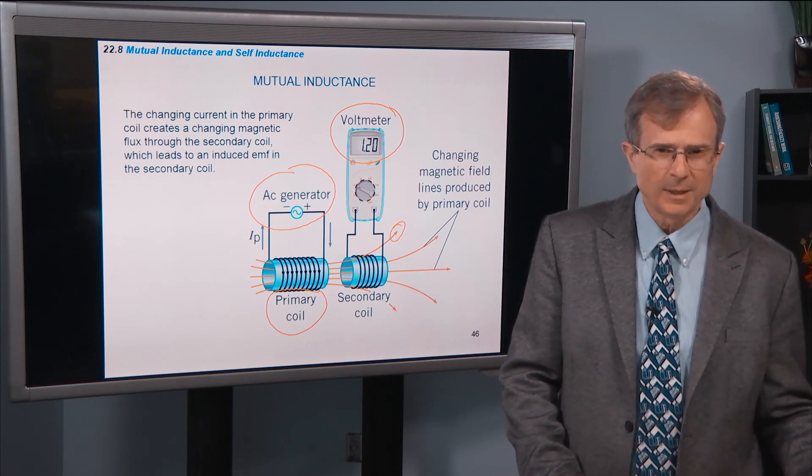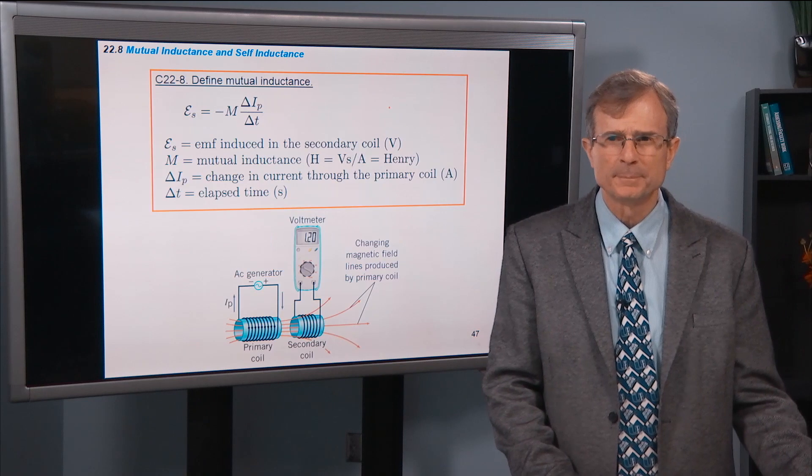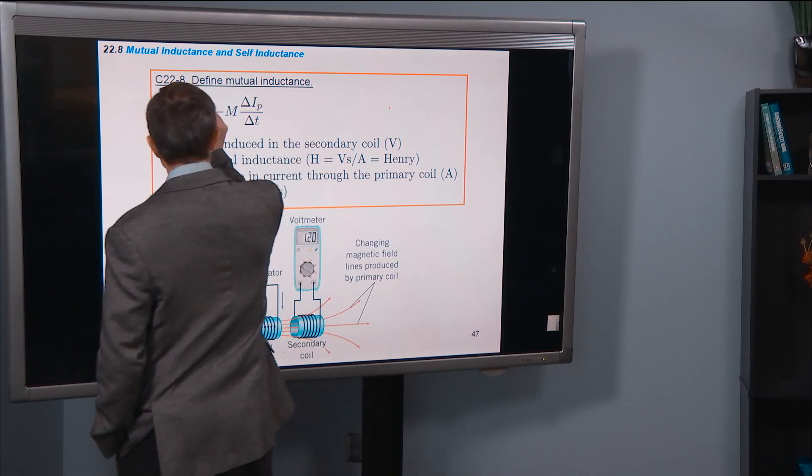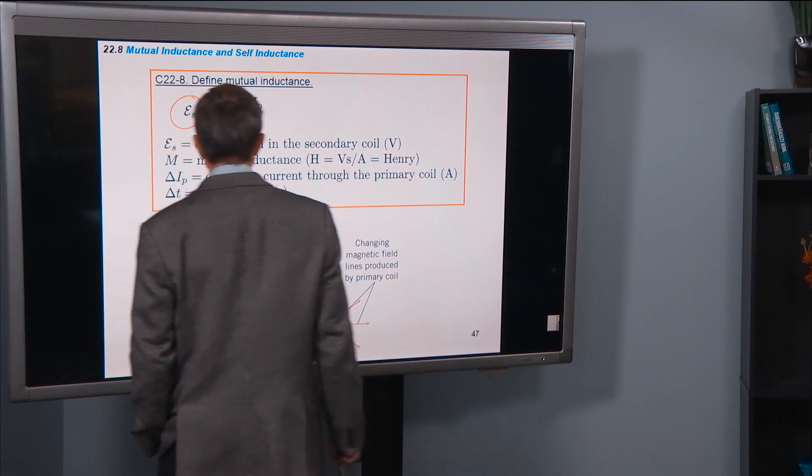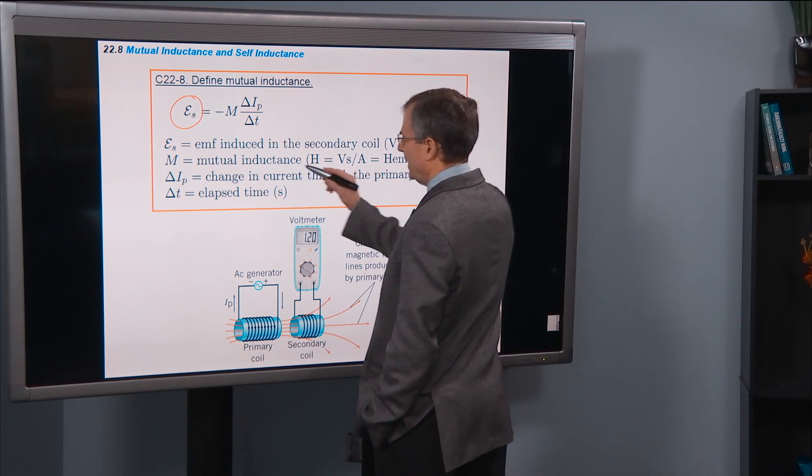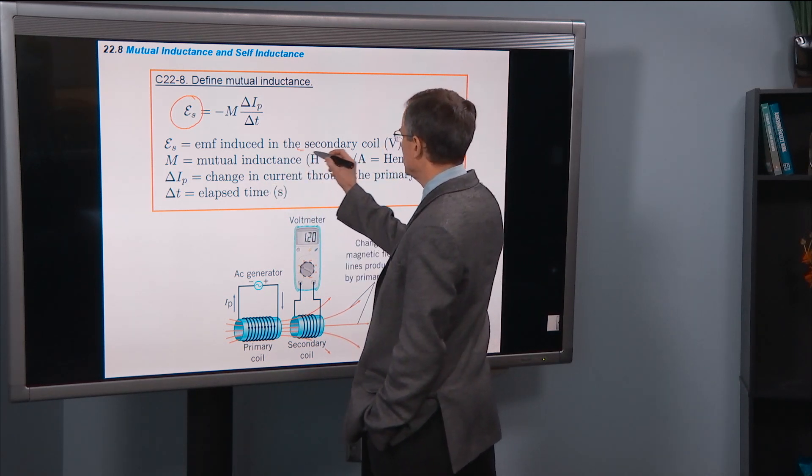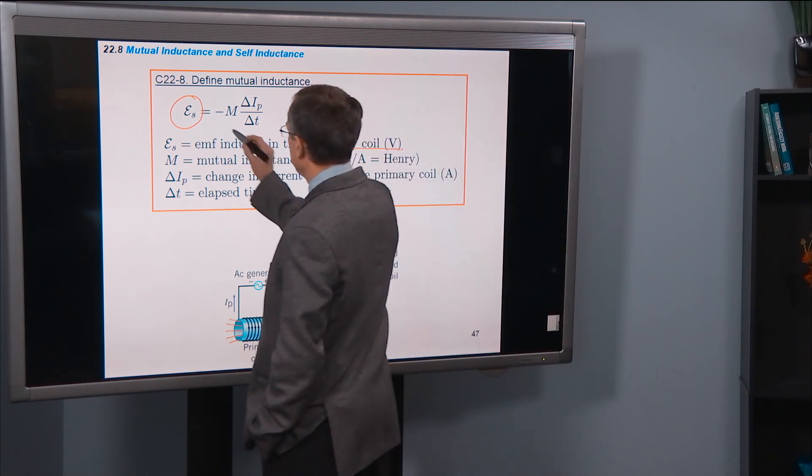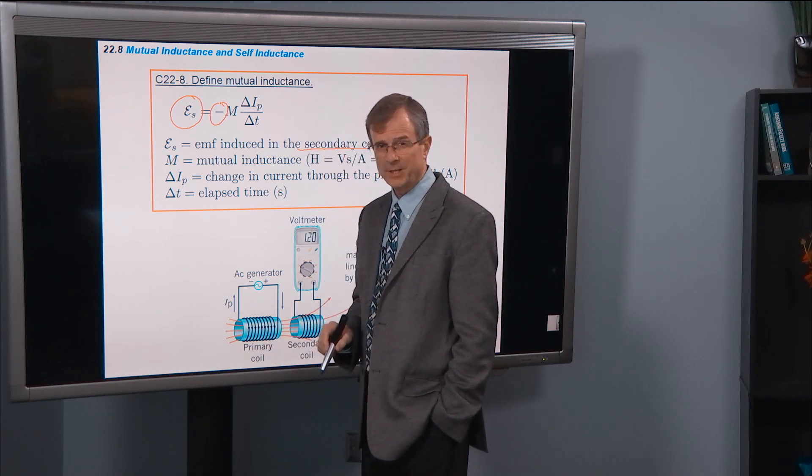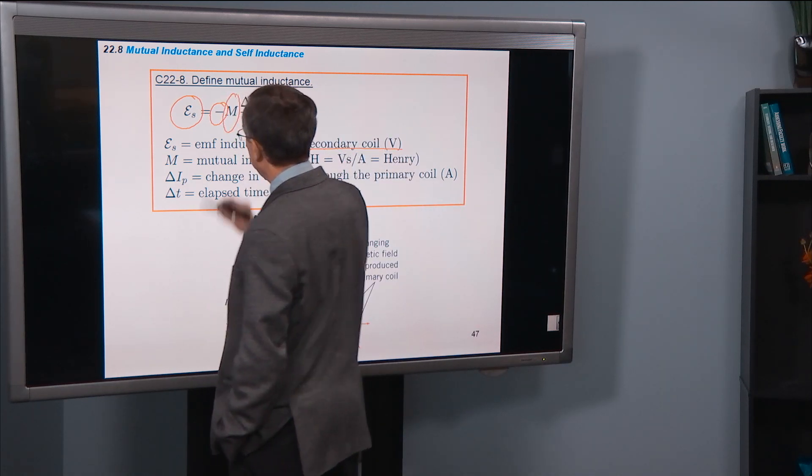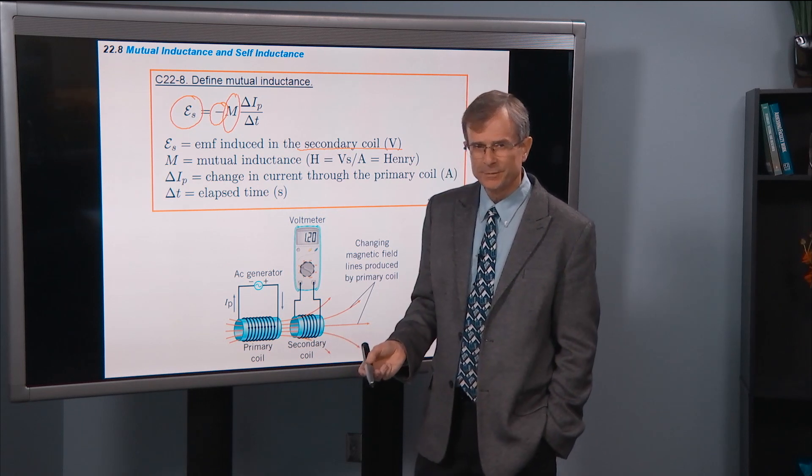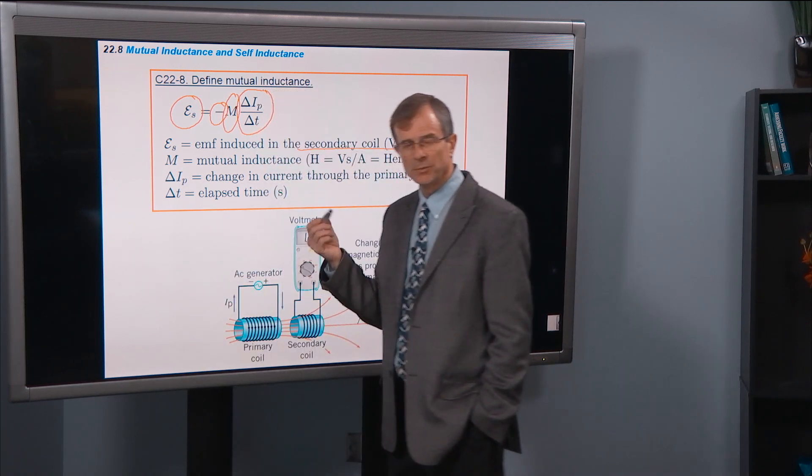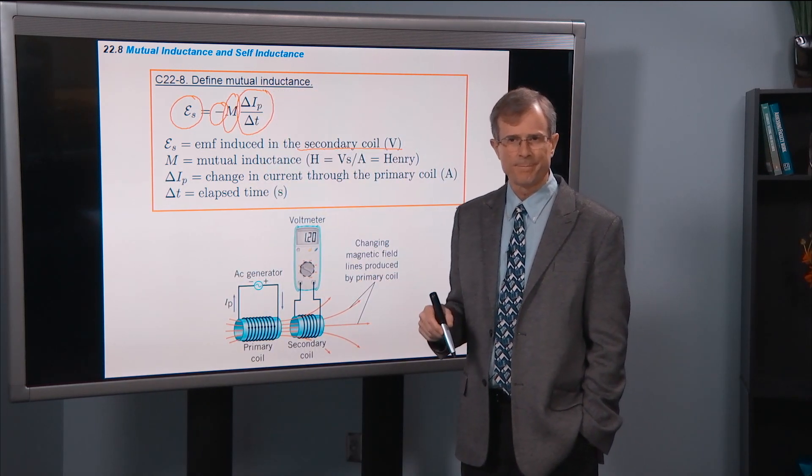As you'll see, the basic idea behind a transformer. The mutual inductance is defined as an EMF. The E_S is EMF induced in the secondary coil. It's defined as a negative sign, which reminds you of Faraday's law. M might remind you of the number of turns in the coil in Faraday's law. And this might remind you of the change in flux divided by the change in time of Faraday's law.